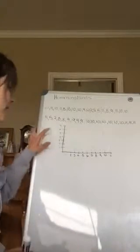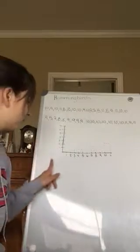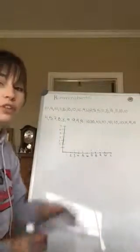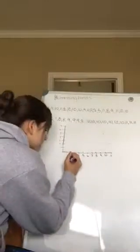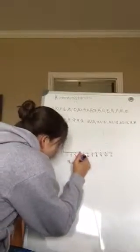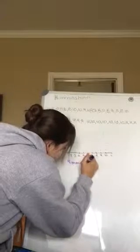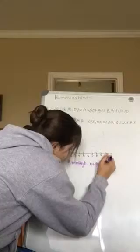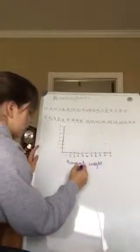Now on my graph here I have my x-axis which I'm going to label hummingbird weight in ounces by the way.